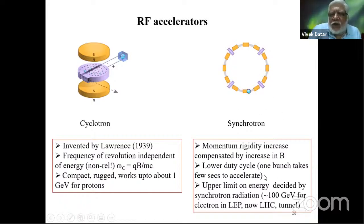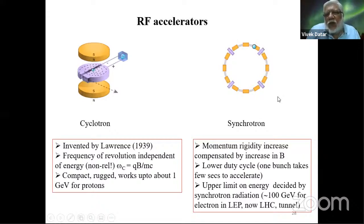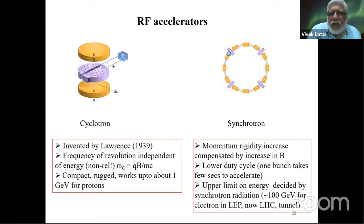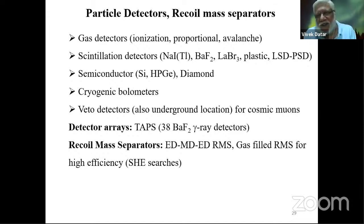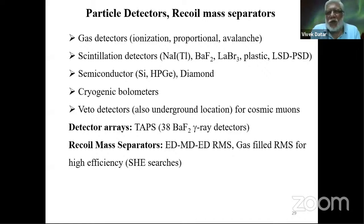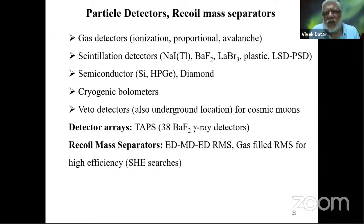Then there is the synchrotron for relativistic particles — you have a single ring with an RF gap where you accelerate, and the energy keeps increasing. Once it has reached maximum energy, you can use it as a storage ring. The magnetic field has to increase in sync with the increasing energy of the beam. The culmination of the great efforts in building accelerators is the LHC, which is also a collider — you accelerate beams in counterclockwise and clockwise directions and make them collide, beams of protons at 7 TeV.